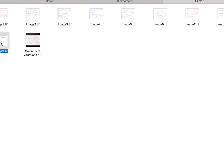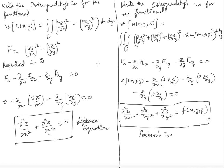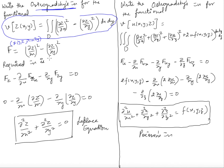Let's see one more example. For the functional with F = z_x² + z_y², applying Ostrogradsky's equation gives F_z = 0 minus d/dx of (2 z_x) minus d/dy of (2 z_y) = 0, which simplifies to ∂²z/∂x² + ∂²z/∂y² = 0. This is the Laplace equation, and there are many techniques available for solving it.